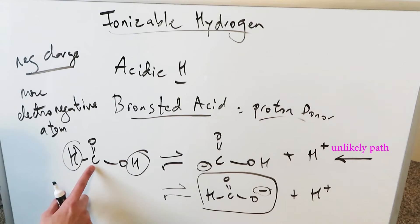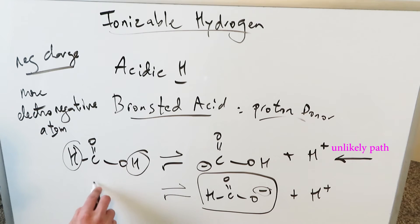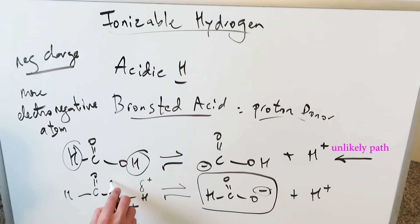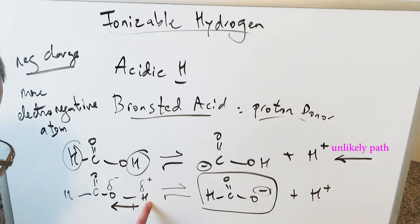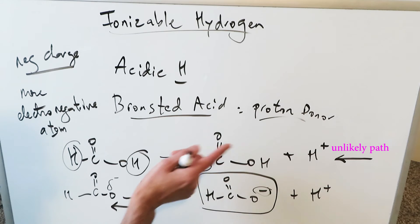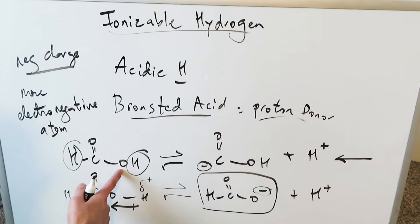The hydrogen attached to the more electronegative atom will be your ionizable, acidic hydrogen. The hydrogen attached to any other atom will not be acidic, because the electronegative atom directs the dipole towards itself, making the hydrogen electropositive and the oxygen electronegative. Because this hydrogen is more positive, it is more ionized and ready to be given off. The prediction of your ionizable hydrogen depends on it being attached to the more electronegative atom.